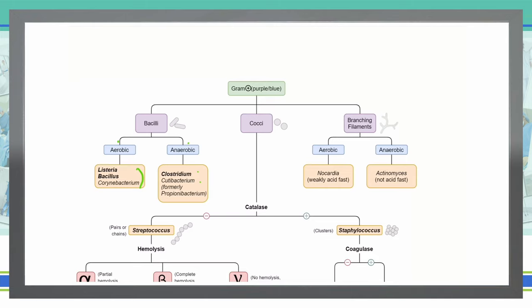We're going to skip over cocci for just a minute because there is quite a bit more to that specific type of organism, and go over to our branching filaments. As you can see here, branching filaments will be obvious under our microscope after our gram stain, and we can break them down into either aerobic or anaerobic.